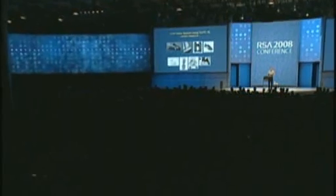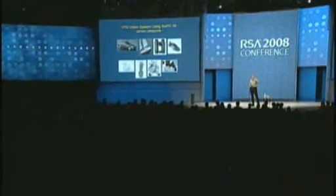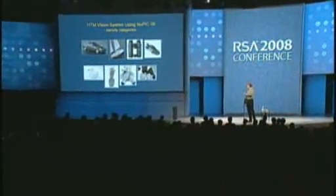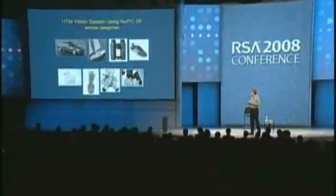At Numenta, we've decided to do a really good vision system as our test case — to test out the tools and test out the algorithms. We've gone from those little line drawings and are now doing high-resolution black and white images. Color is actually pretty easy, but we want to do the harder problem, which is black and white. These are the kinds of objects we're training on now.